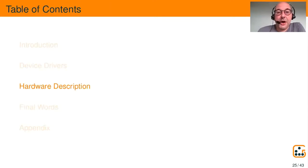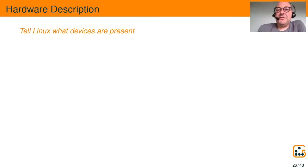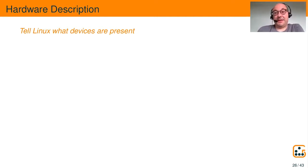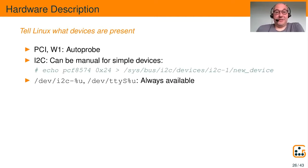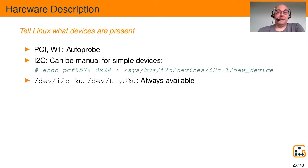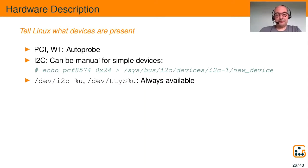We've arrived at hardware description. Hardware description is about telling Linux what devices are present on the system, because if Linux doesn't know, drivers can't access them, and applications can't access them either. For several bus types there's auto-probing — for example PCI or OneWire. I2C devices are typically described, but there's a way to tell Linux a device is present by writing to a new_device file in SysFS, for example declaring a PCF8574 GPIO expander at address 0x24. The /dev/i2c and /dev/i2c-N device files are available as soon as Linux knows the device is there.